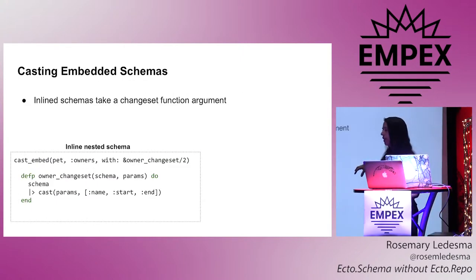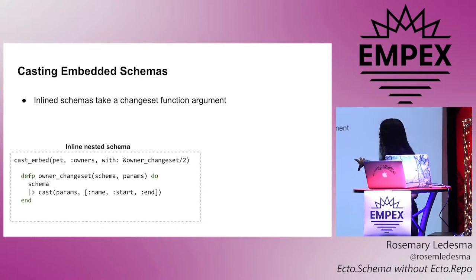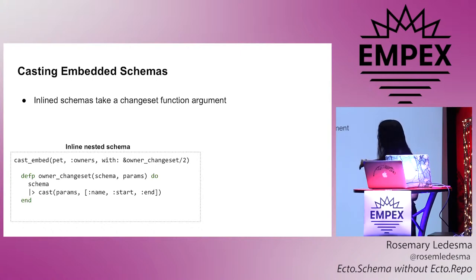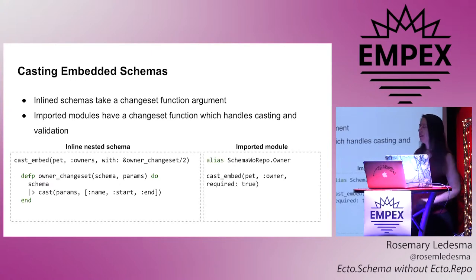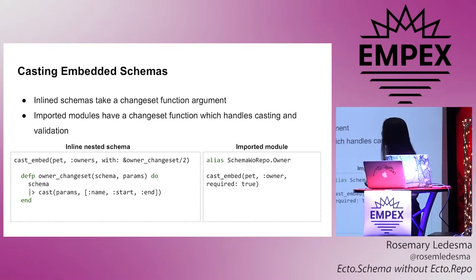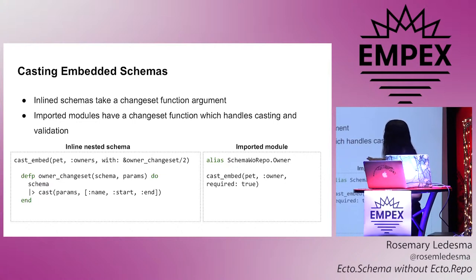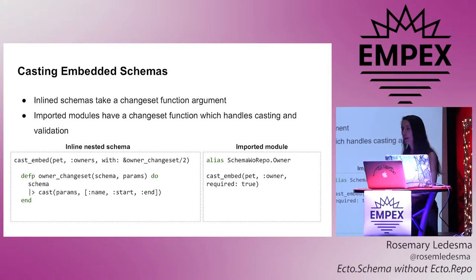If you do the inline style, this is how you would cast into it — you provide as an argument the function that's going to process that changeset, taking in the params and doing whatever casting you need. If you use the other strategy where you're importing a module, that module needs to have a changeset function and that will get called for you. You do have to use this special type of casting called cast_embed, and then you can say things like whether it's required.